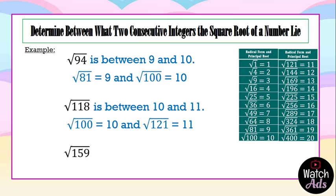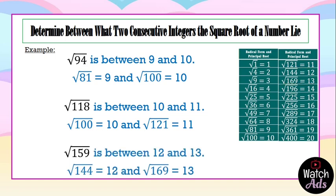Our last example of this set is the square root of 159. Looking at our side note, we can clearly see that it is between the square root of 144 and the square root of 169. Taking its principal roots, 12 and 13, our conclusion is that the square root of 159 is between 12 and 13.